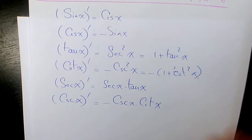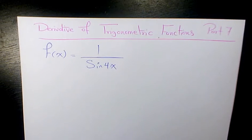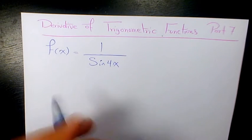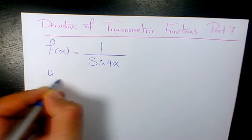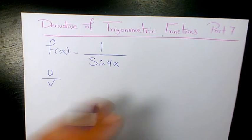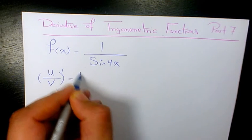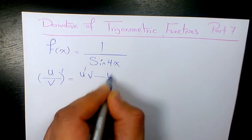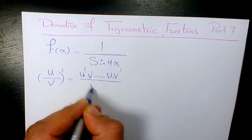Let's go back to the question. We have function 1 over sine 4x. Whenever we have rational functions, I'm going to do it in two different ways. u over v is going to be u prime v minus u v prime divided by v squared.